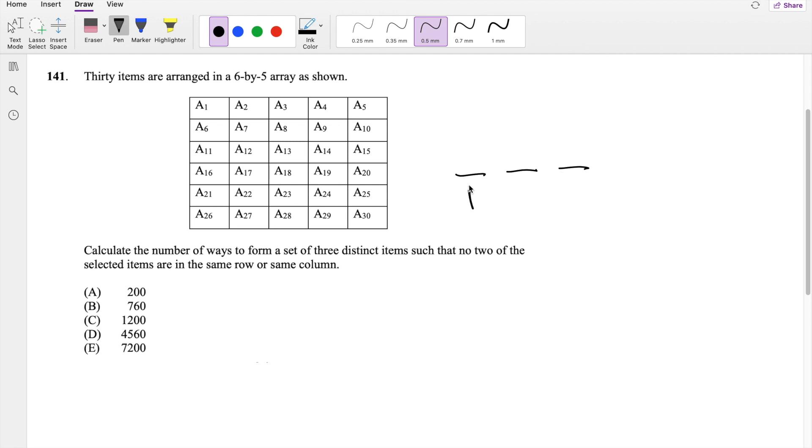So if we already selected something for this one, this slot right here, can't have the same column or the same row. So the first choice, you actually have all of them, right? Six times five, that's 30. So you have 30 choices for the first one.